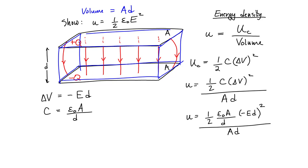Now look at what we have. The area A in the numerator cancels with the area in the denominator. The distance squared in the numerator cancels with the distance squared in the denominator. This gives us that the energy density, lowercase u, is equal to one-half times the permittivity of free space times the magnitude of the electric field squared.